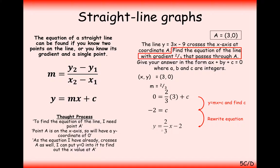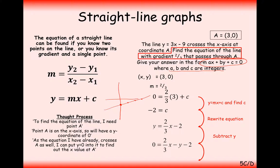The equation of our line is y equals 2/3 x minus 2. That's not our final answer though, because it wants the form ax plus by plus c equals 0. The clue is that a, b, and c must be integers — whole numbers, positive or negative — so we need to get rid of any fractions. First subtract y to the other side, then multiply through by 3 to clear the fraction. The final answer is 2x minus 3y minus 6 equals 0.